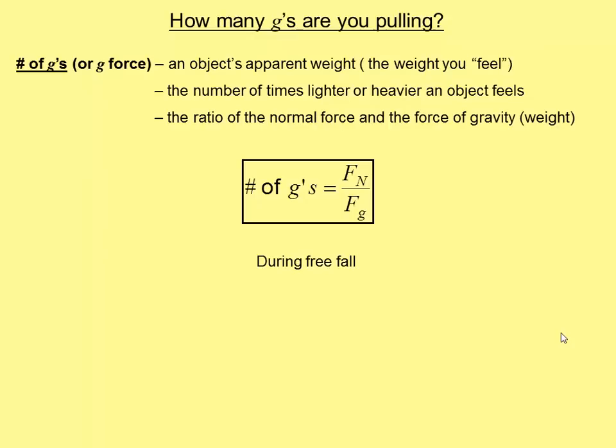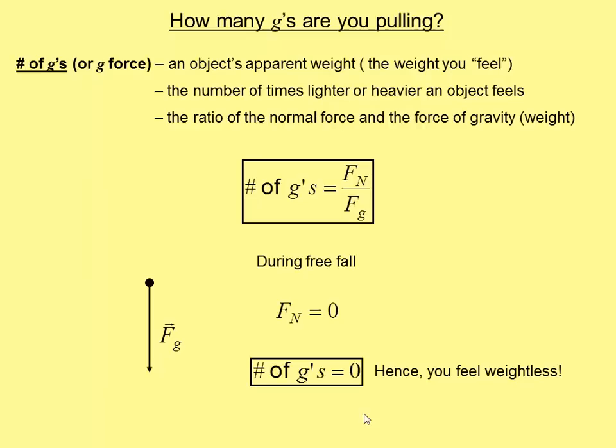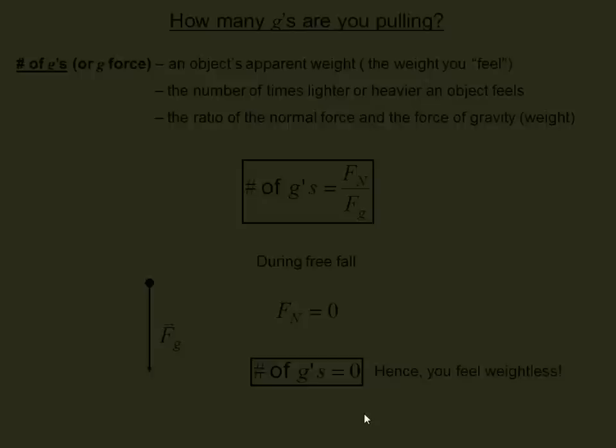For example, let's say that you are in freefall. In freefall, by definition, the only force acting on you is the force of gravity. And therefore, your normal force is zero. Plugging that into the equation, you can see that you would be pulling zero g's. And so because you're pulling zero g's, it doesn't mean that you're weightless. There's still a force of gravity acting on you. But you feel weightless because the floor is not supporting you at all. And so it feels just like somebody flipped a switch and you turned off gravity.